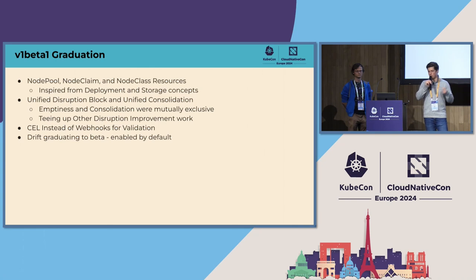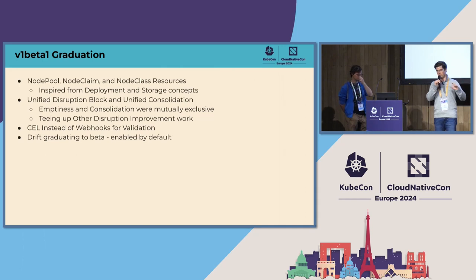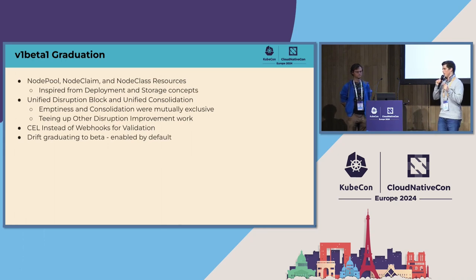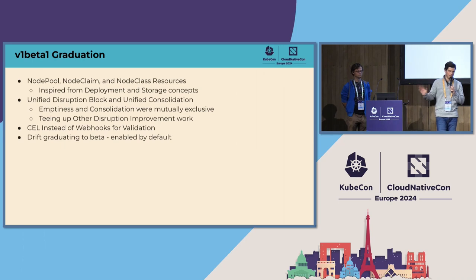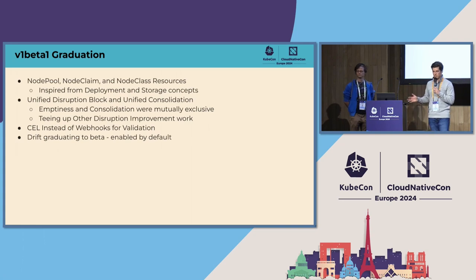NodePools took inspiration from Deployment — they have a Template section because NodePools templatize NodeClaims, which are responsible for creating a request for a Node resource provisioned by your cloud provider. NodeClasses allow you to define a flavor of the NodeClaim you want to launch — describing cloud provider-specific things like the image, subnets, and security groups. We also collapsed a lot of disruption detail; there was technical debt around disruption sections in Provisioner v1alpha5.